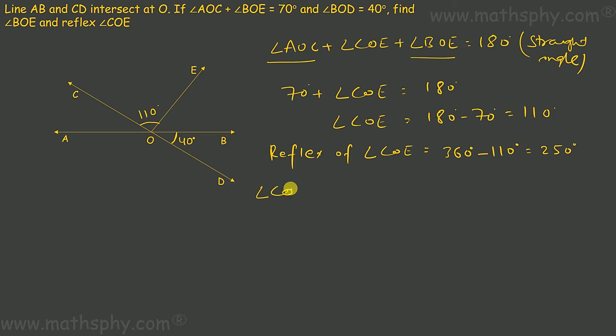Now, angle COE plus angle BOD plus angle BOE putting together equals 180 degrees. They fall on this line. You can write it as a straight angle. COE is 110, BOD is known to us as 40 degrees. So now I can easily determine angle BOE. This will be 150 plus angle BOE equals 180. So angle BOE would be 180 minus 150, which gives you 30 degrees.